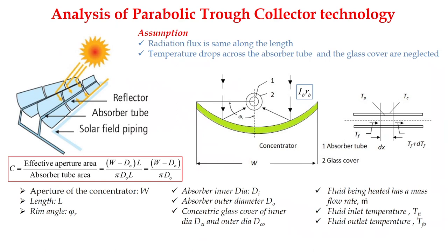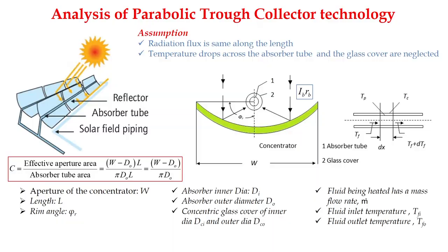To study the parabolic trough collector, we assume radiation flux is uniform along the length and losses across the absorber tube and glass cover are neglected. The rim angle is the angle formed by joining the center of the tube to the edge of the concentrator and drawing a vertical line. W is the aperture of the concentrator. Subscript 1 indicates absorber tube and 2 indicates glass cover. Absorber inner diameter is Di, outer diameter Do, then inner diameter of glass DCi and outer diameter DCo. Mass flow rate is ṁ.